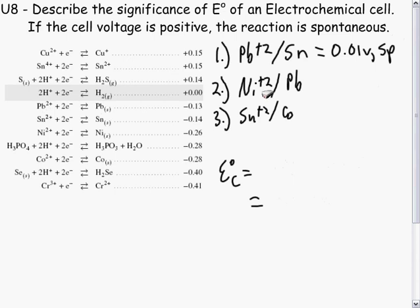For the second cell, nickel plus 2 and lead. This is an uphill reaction, so we know that it will not be spontaneous.